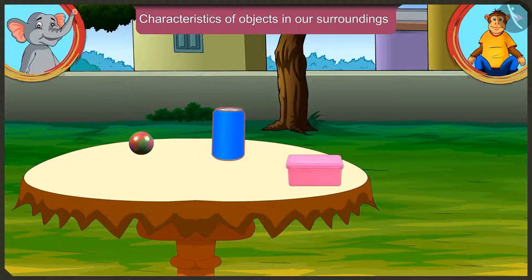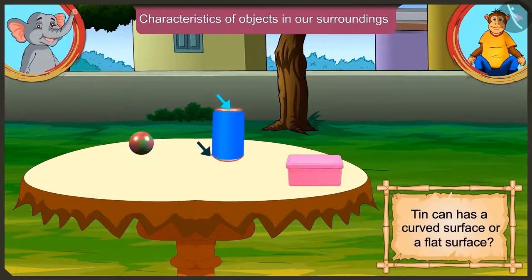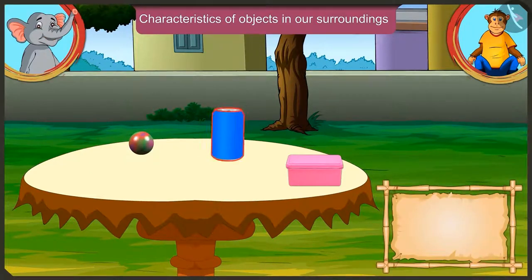And the tin can? Hey, this can stand upright like the lunchbox, but it is also curved like the marble. So does it have a curved surface or a flat surface? It has a cylindrical shape. That means it is a cylinder.